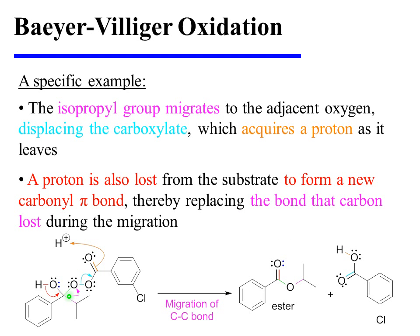The isopropyl group migrates to the adjacent oxygen atom, displacing the carboxylate, which also acquires a proton as it leaves. Furthermore, a proton is lost from the substrate to form a new carbon-oxygen pi bond, thereby replacing the bond that carbon is losing during the migration. The product is an ester, accompanied by meta-chlorobenzoic acid as a byproduct.